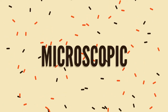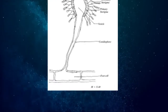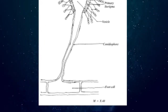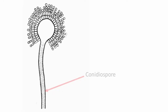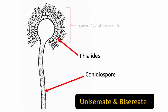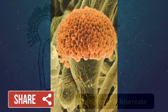Microscopic characteristics: hyphae are septate with dichotomous branching. Conidiophores are variable in length, short and smooth. Phialides are uniseriate or biseriate, usually covering the upper one-half of the vesicle, though some sources mention they can cover the entire vesicle.